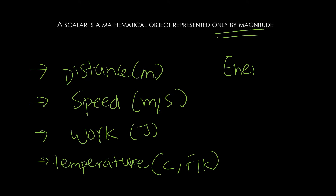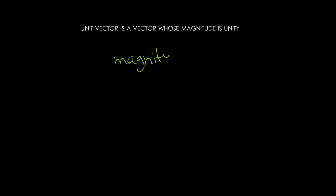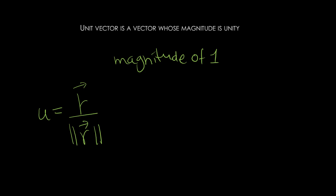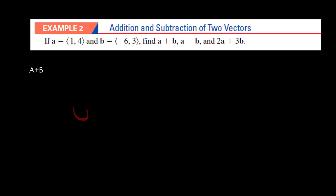And energy, measured in joules — these are a few examples of scalars. Now, what is a unit vector? A unit vector is a vector whose magnitude is unity, like a magnitude of one. The formula for the unit vector is the given vector divided by the norm of the vector. The norm is calculated like the Pythagorean theorem: square root of x-squared plus y-squared.